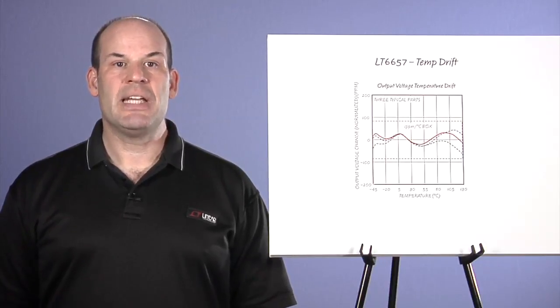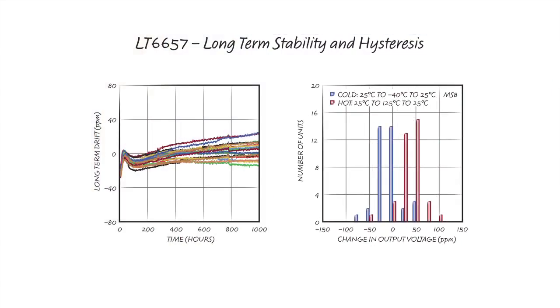Adding to the overall stability are low thermal hysteresis and excellent long-term stability. These are measures of how well the system will stay within specification over time and temperature cycles. Both plots show that the drift over time and temperature cycles is low and consistent. When these characteristics are well behaved, it is easier to predict drift over the life of a product.